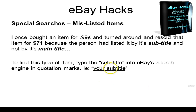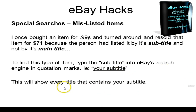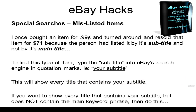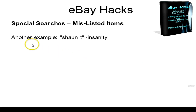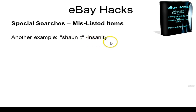For example, you would type 'Deal Getting Hacks' in quotation marks. This will show every eBay listing that only contains your subtitle in the listing's title. If you want to show every title that contains your subtitle but does not contain the main keyword phrase, you can use a minus sign. For instance, type 'Sean T' in quotation marks — Sean T being the star of the Insanity workout — then a minus sign, then 'Insanity.' This returns results that have 'Sean T' in the listing title but not the word 'Insanity.'